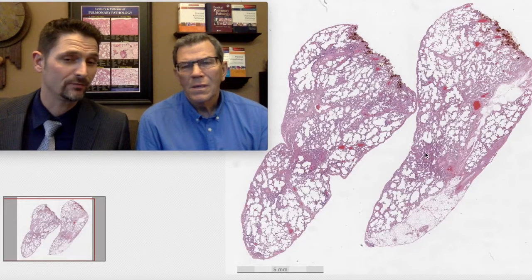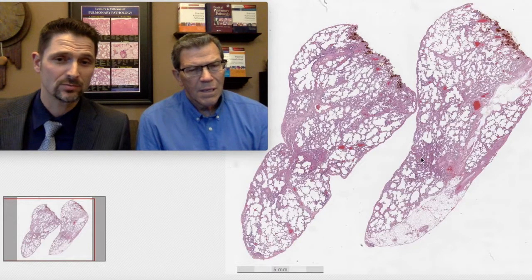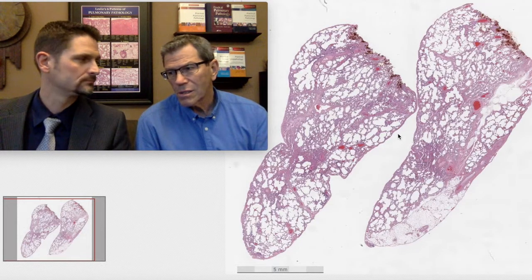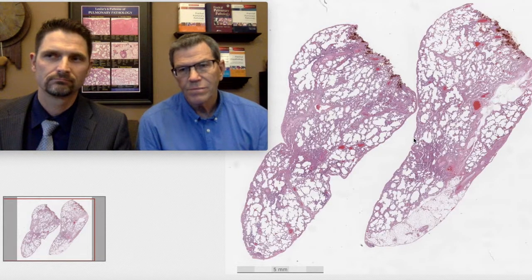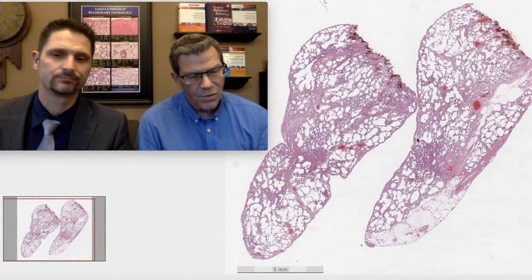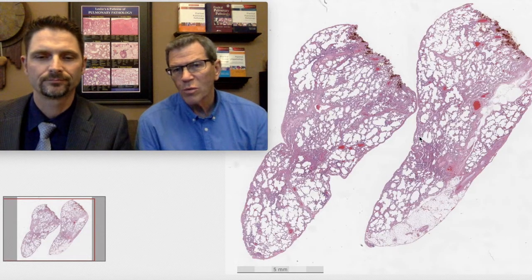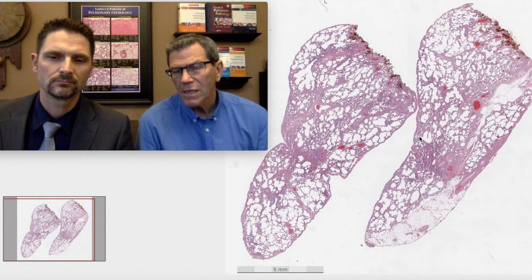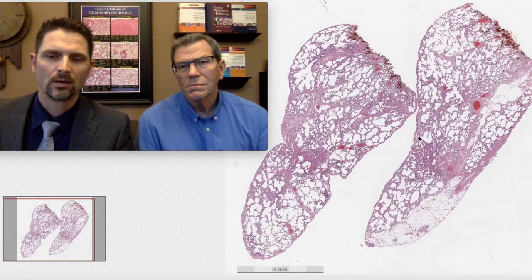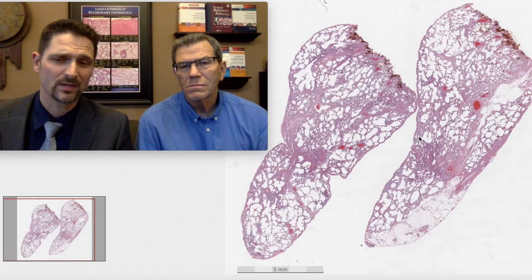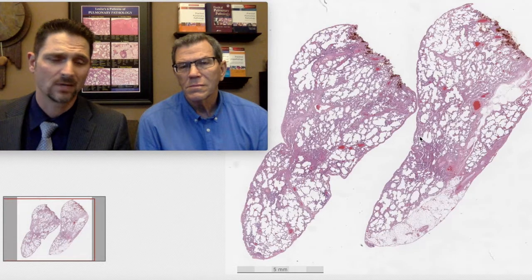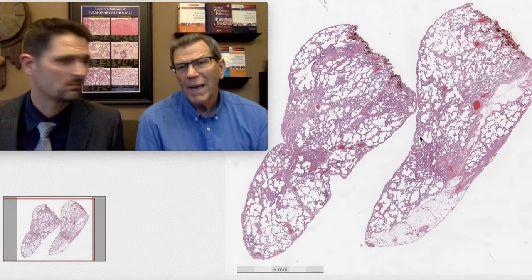When you've got a patchy distribution, if it's patchy and nodular, always think about airway-associated disease, which are inhalational diseases. Sometimes autoimmune, but mainly inhalational. So from low power, it's a blue biopsy, a little bit accentuated in the central lobular regions, and it's patchy.